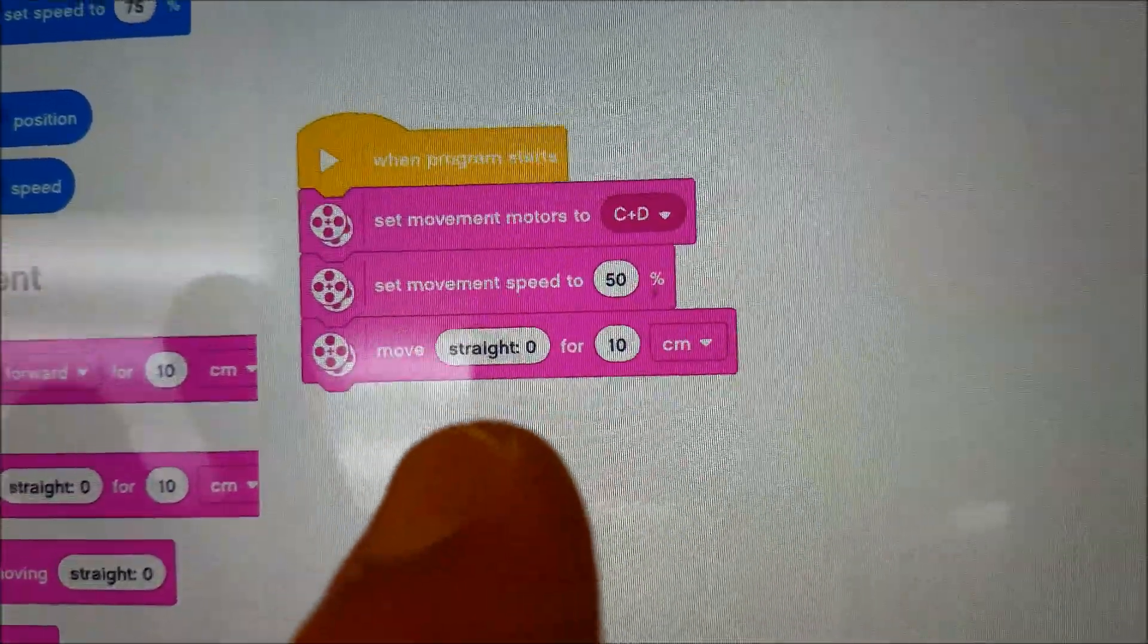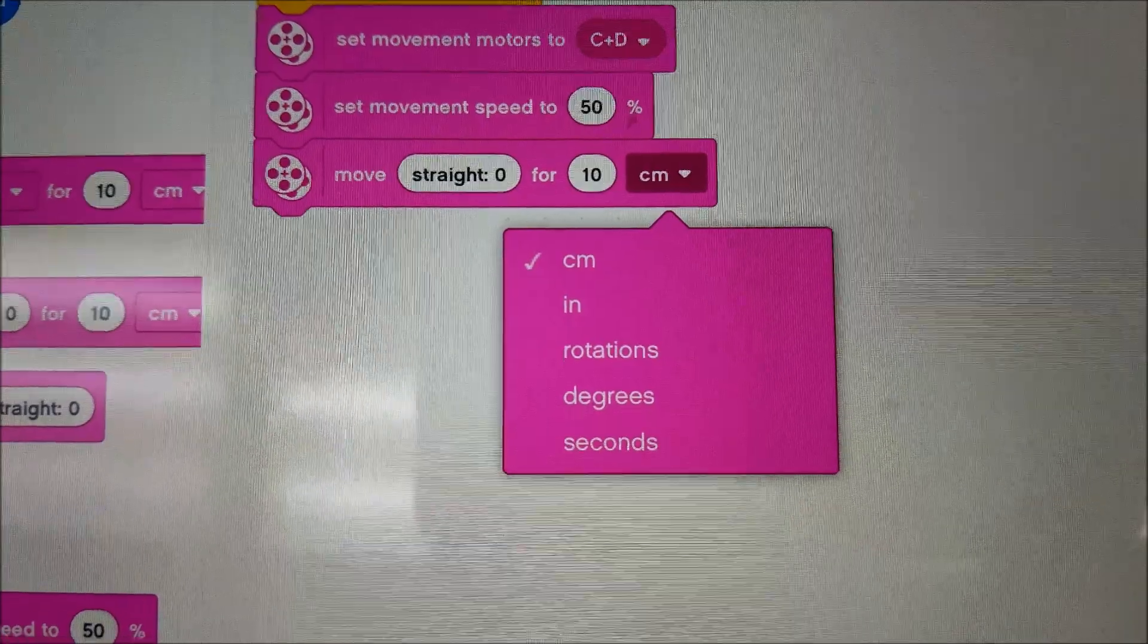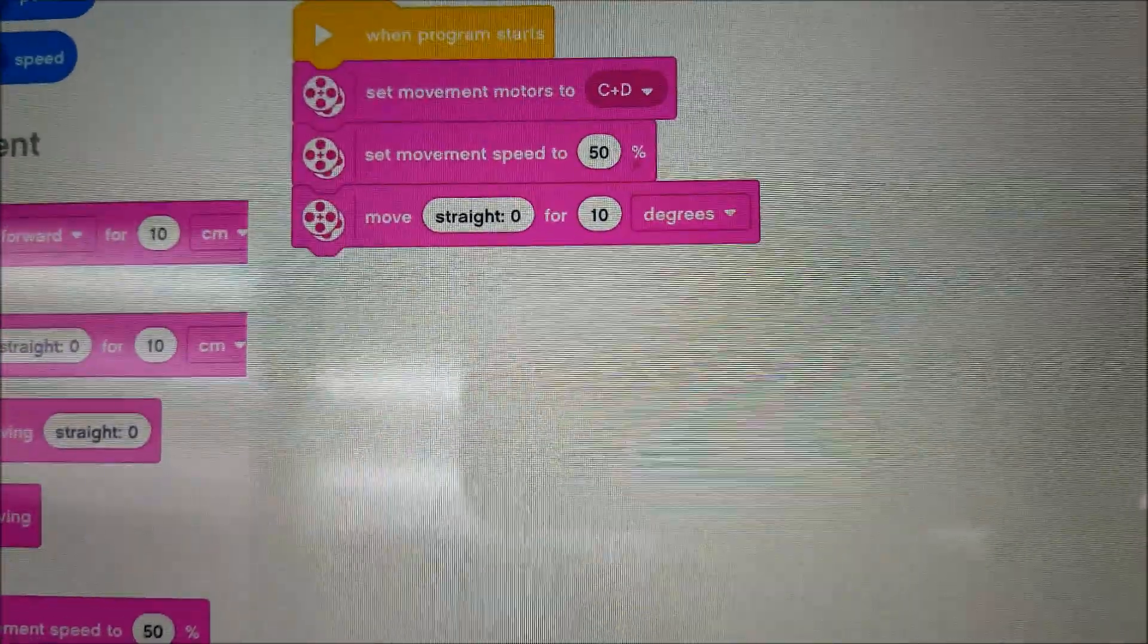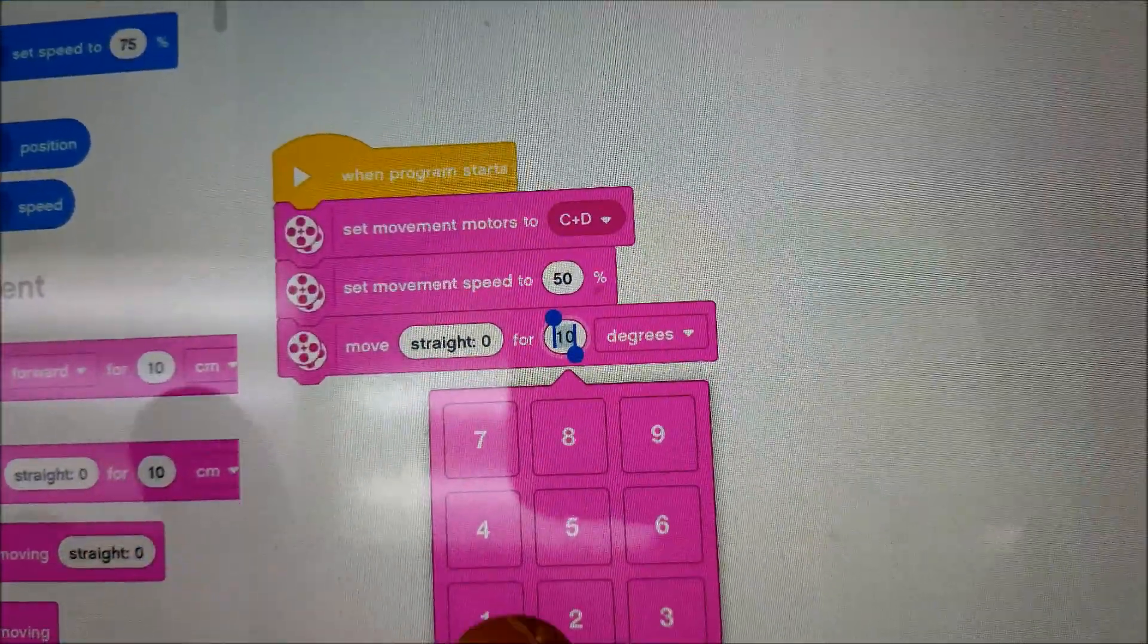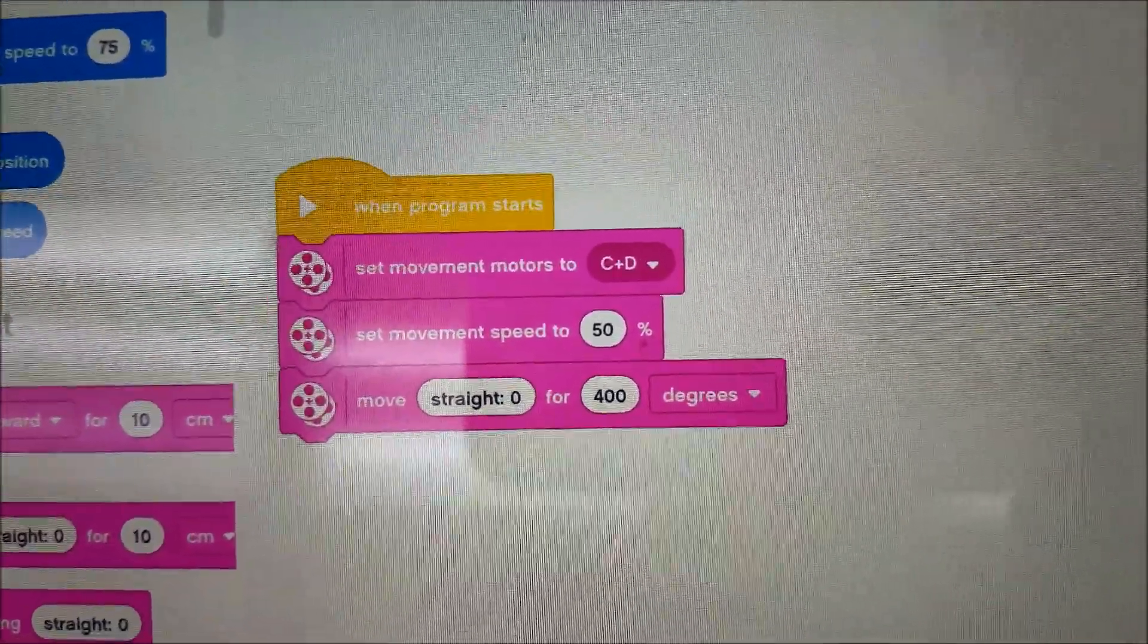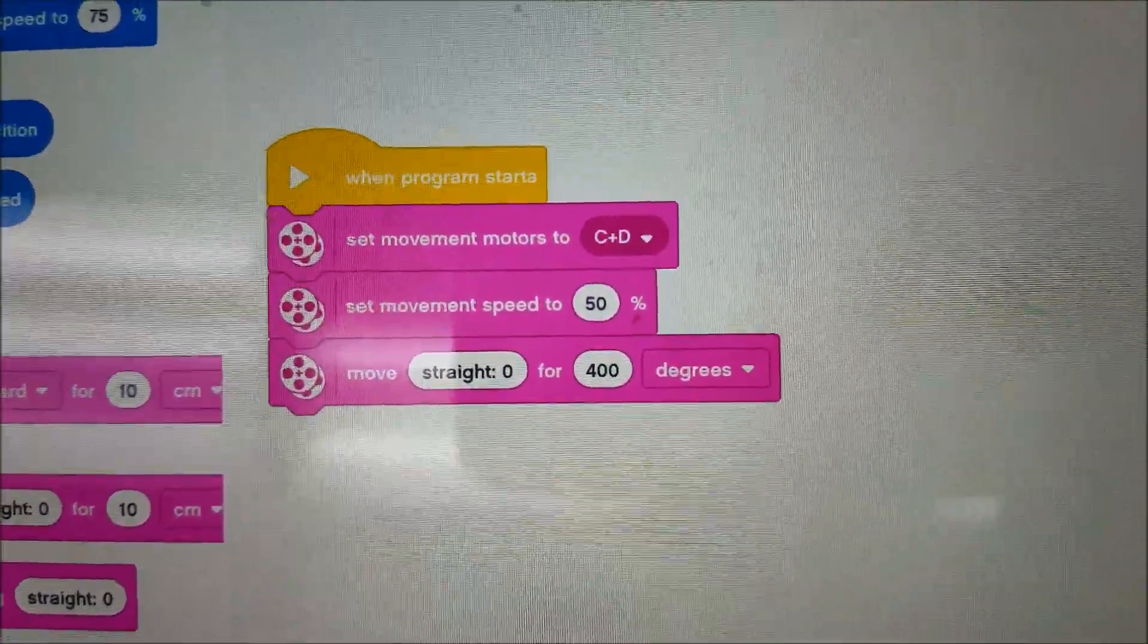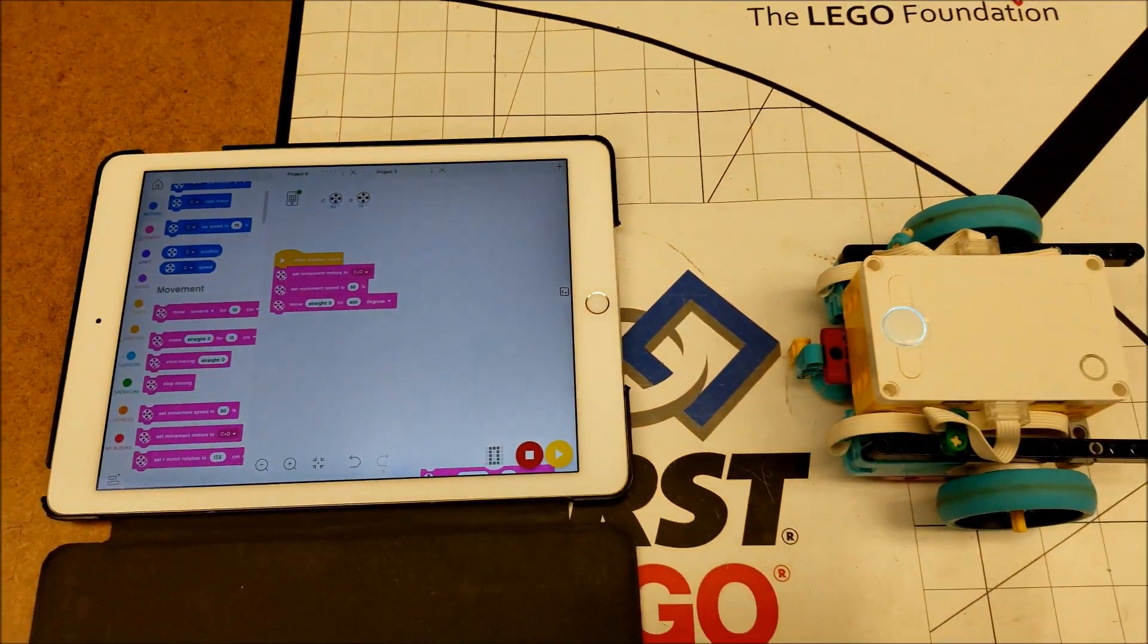Then we will grab the move straight block, and there's where we can change this to rotations, degrees, and seconds. You guys know me, I'm a big degrees fan, so I'm going to change this to let's say 400 degrees. So let's review what's happening here: the motors C and D are going to go at 50 percent motor speed and they're going to go straight for 400 degrees.